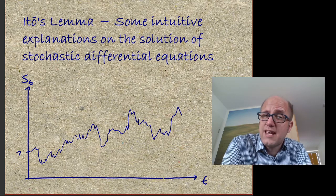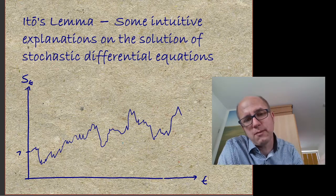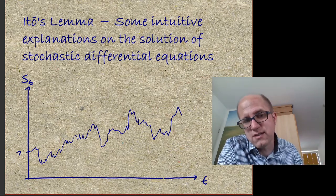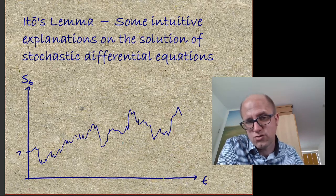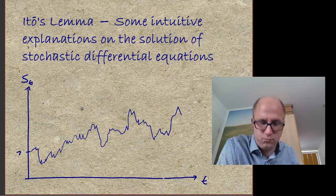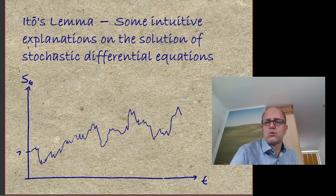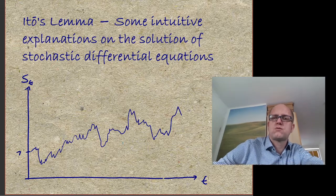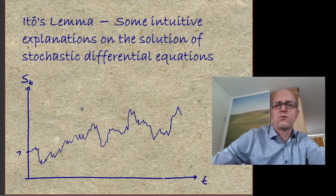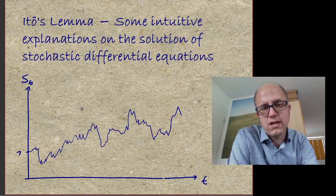So it means that if these percentages wiggle up and down, on average you're going to lose some money. This up and down is called the volatility, and it means the volatility has to be taken into account in the compound interest. This is exactly what Ito's lemma is doing — one could say Ito's lemma is just compound interest, taking into account this effect in a continuous time version.